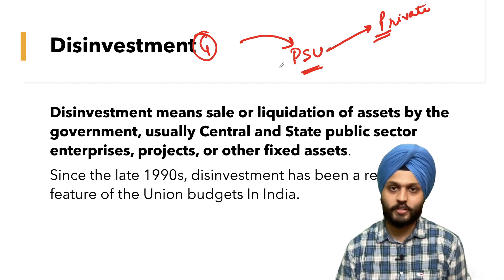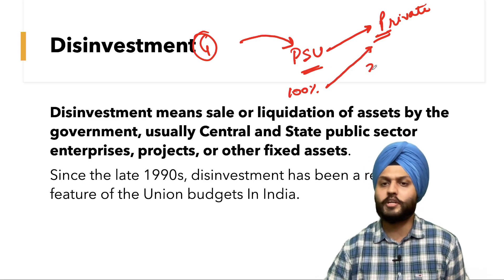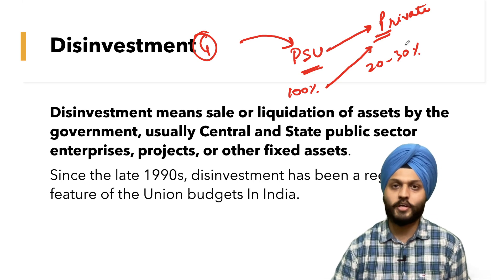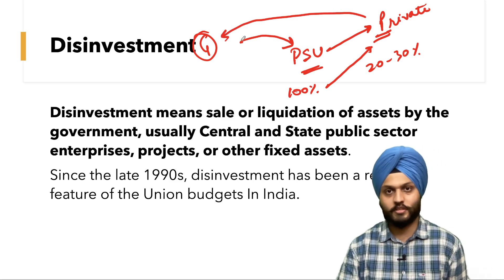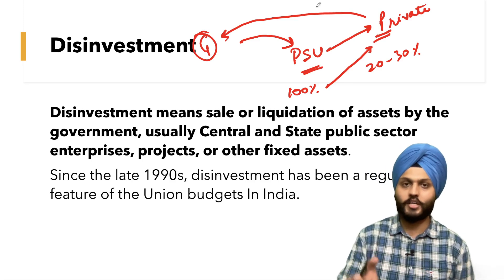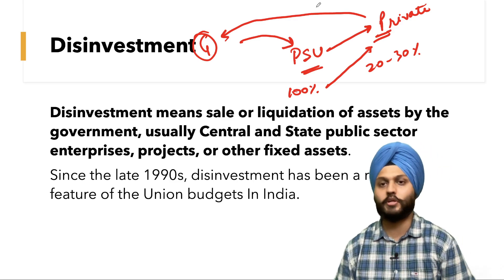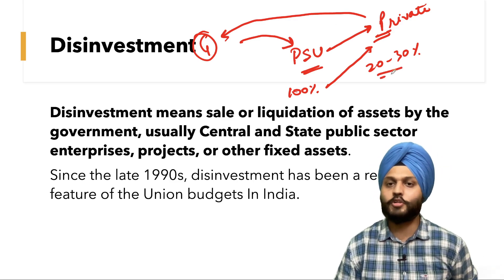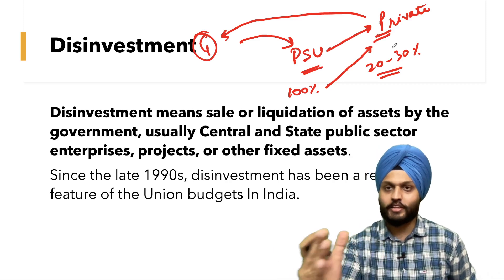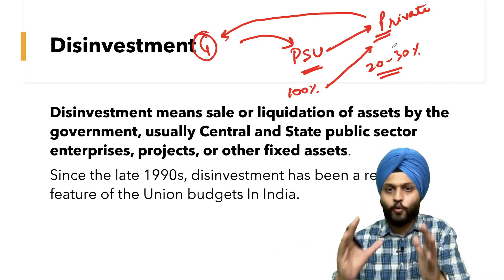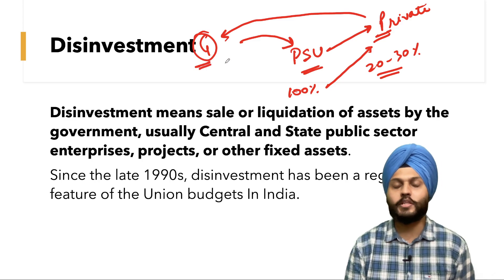In minority disinvestment, the government has 100% share of a particular PSU and it sells 20% or 30% of it. The government gets capital receipts and earns revenue because of this. The management control remains with the government — this is minority disinvestment.